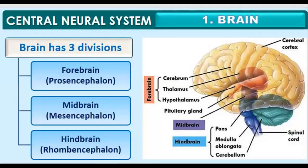Hello students, welcome back to Easy Biology Tutorials. In the last class we were already discussing that the brain has three parts. The first part is the forebrain, also known as the prosencephalon. The second part is the midbrain, known as the mesencephalon. The third part is the hindbrain, known as the rhombencephalon.